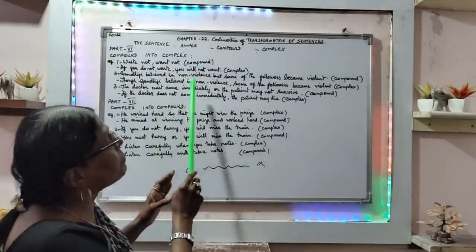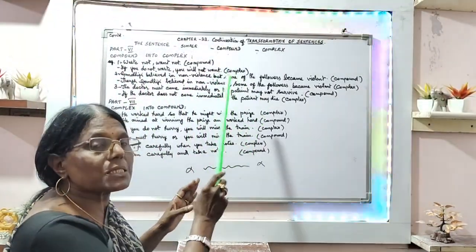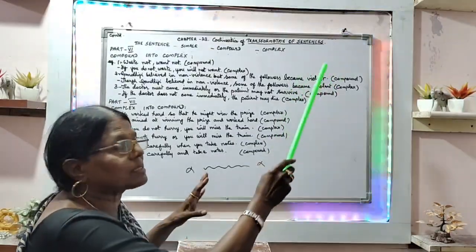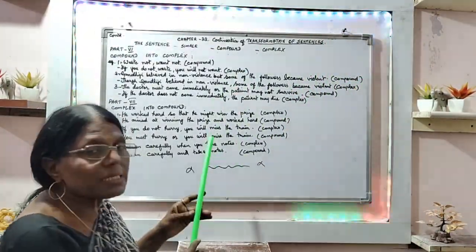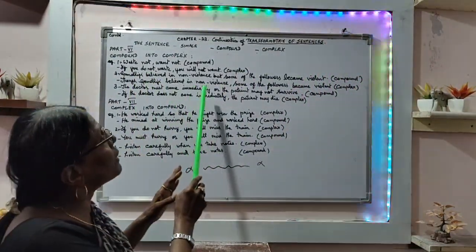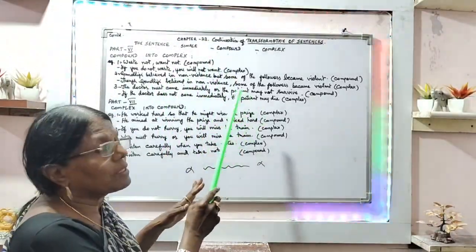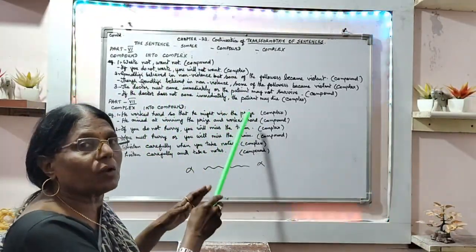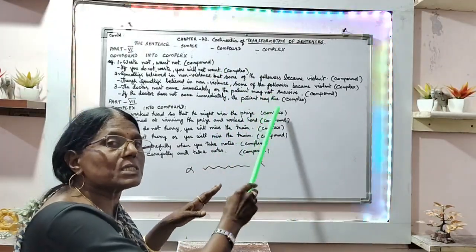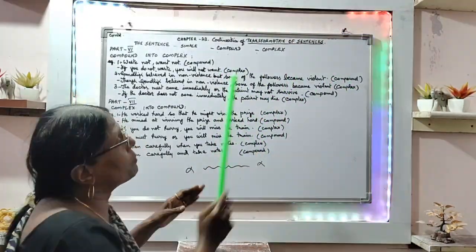Second example: Gandhiji believed in non-violence, but some of the followers became violent. That is a complex sentence. Though Gandhiji believed in non-violence, some of the followers became violent. That is a complex sentence.